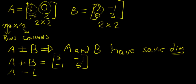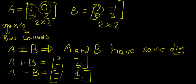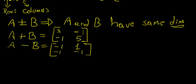Now A minus B: 1 minus 2, that's minus 1. Then 0 minus minus 1, so that's plus 1. Minus 1 plus 0, that's minus 1 again. And 2 minus 3, that's minus 1. So those are the results from those matrices — that's a very straightforward operation.